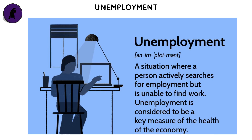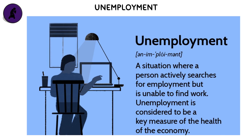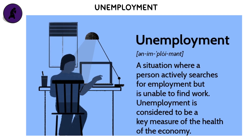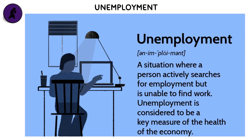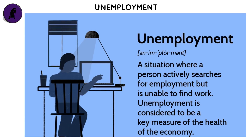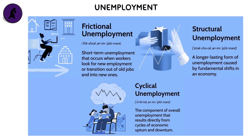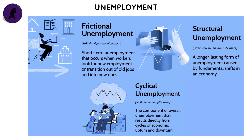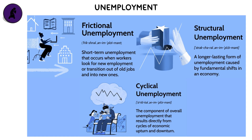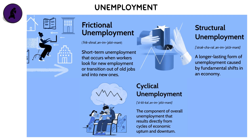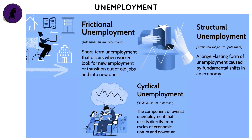Unemployment occurs when people who are willing and able to work cannot find jobs. It's one of the most important indicators of economic health because it reflects both productivity and living standards. Economists identify several types: frictional unemployment, which is temporary between jobs; structural unemployment, caused by technological or industry shifts; and cyclical unemployment, due to economic downturns.